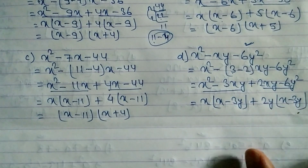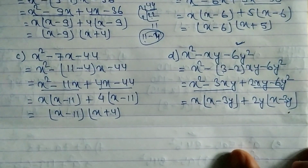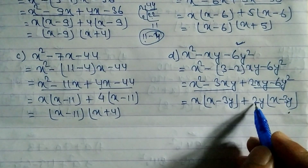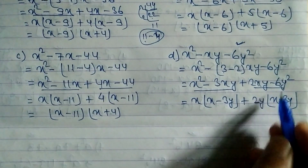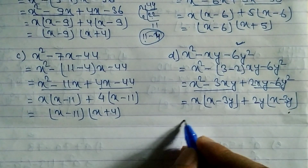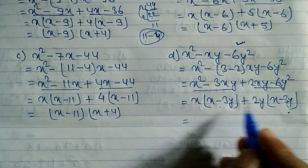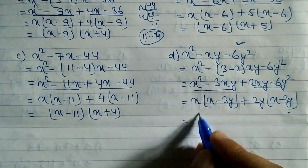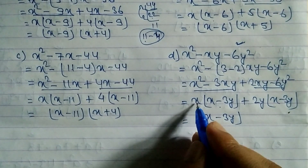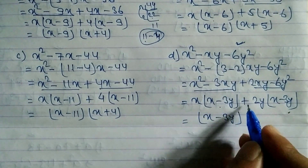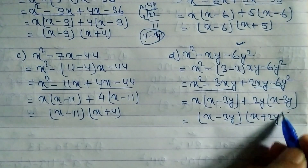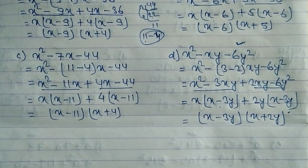Both groups have (x - 3y) as a common factor. Note that 2 times 3 is 6, and y times y is y². Taking (x - 3y) as common, the remaining factor is (x + 2y). So the answer is (x - 3y)(x + 2y). Hope you understand.